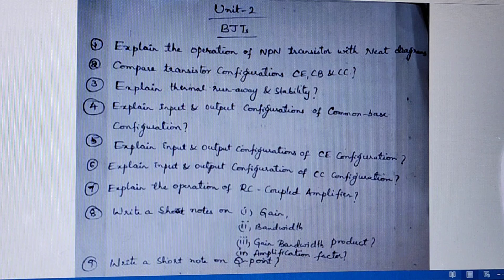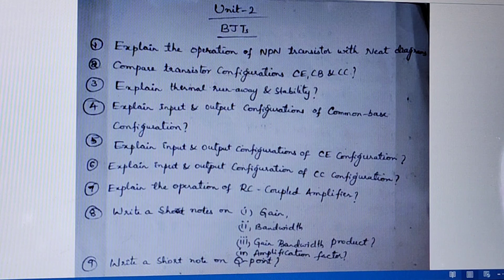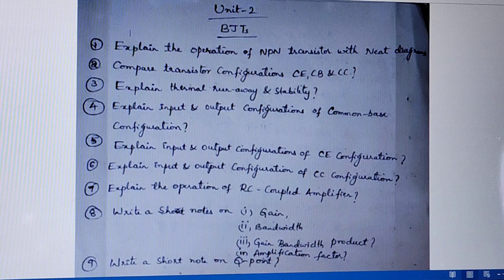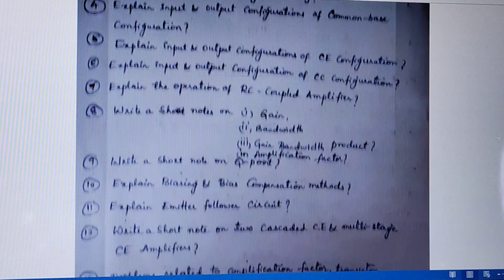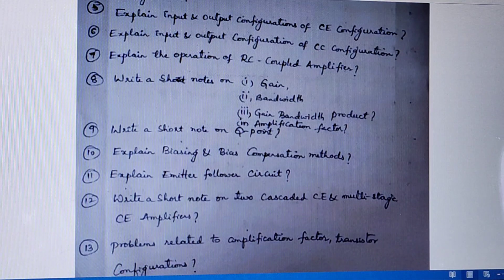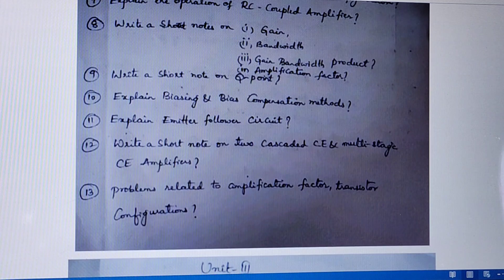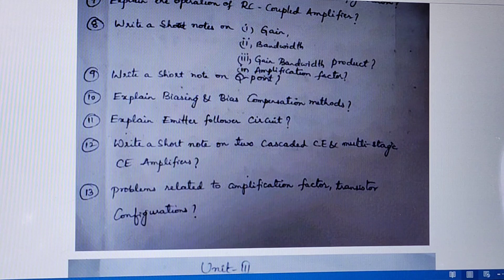Seventh question is explain the operation of RC coupled amplifier. Next, write a short note on gain bandwidth product and amplification factor. Next, write a short note on Q-point, that is the operating point. The next question is explain biasing and the biasing compensation methods. Eleventh question is explain emitter follower circuit. Twelfth question is write a short note on two cascaded CE and multi-stage CE amplifier.